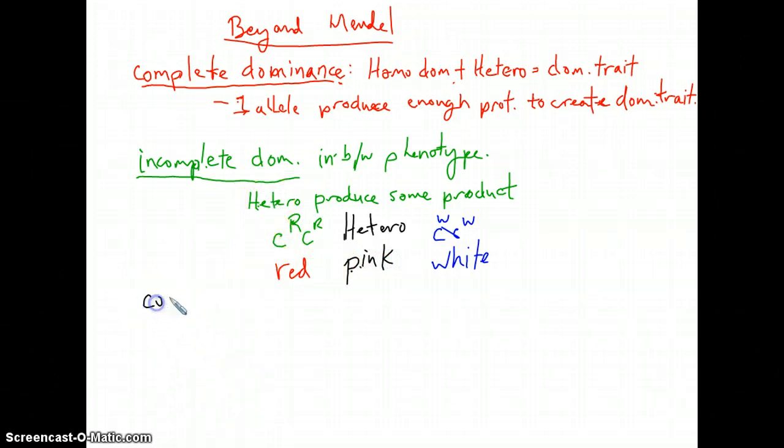Now, in the case of codominance, both alleles are being expressed. So both protein products are being made. What you could say for that is both alleles influence phenotype.